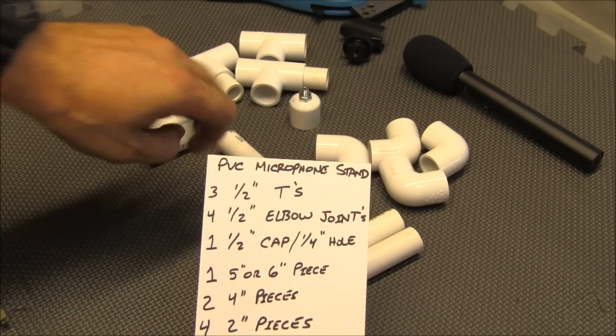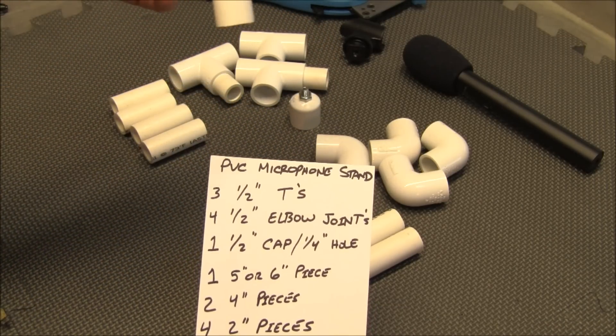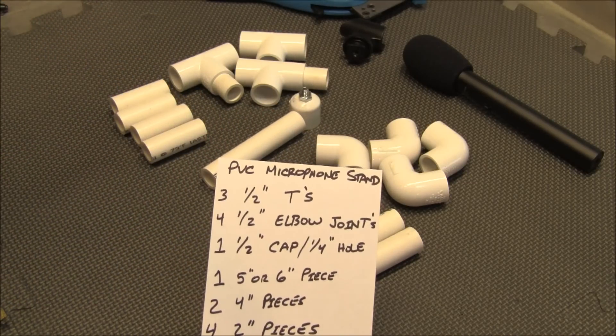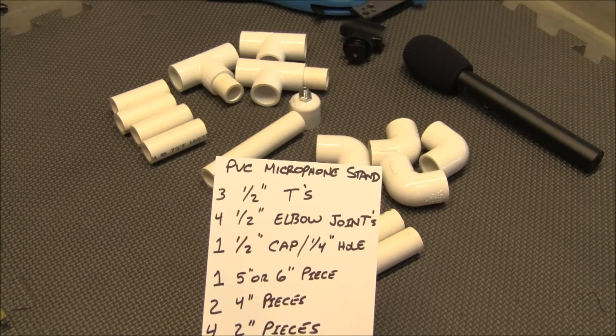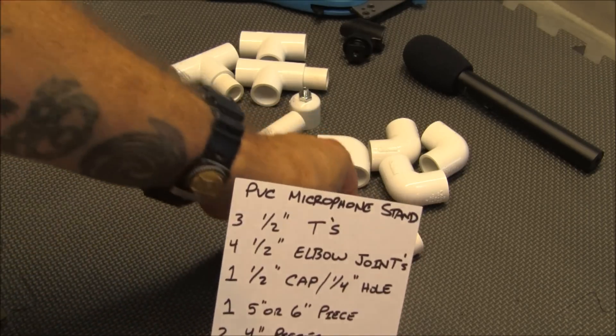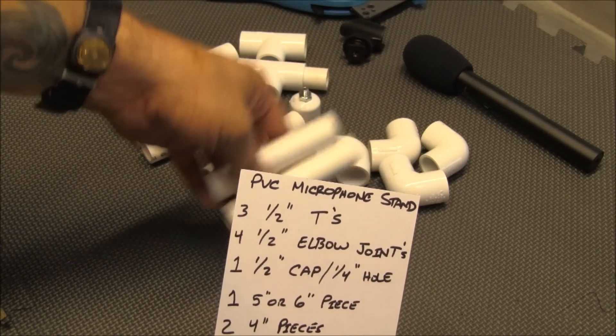You're going to need a 5 or 6 inch piece, just a straight piece to act as a stand riser where your microphone is going to sit on. You're going to need two 4 inch PVC pieces and that's right here behind the card.